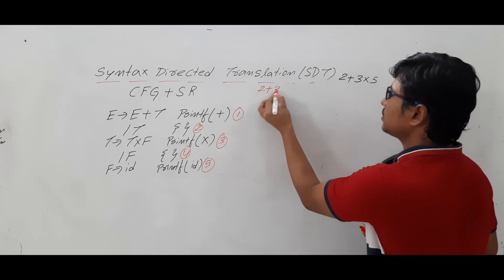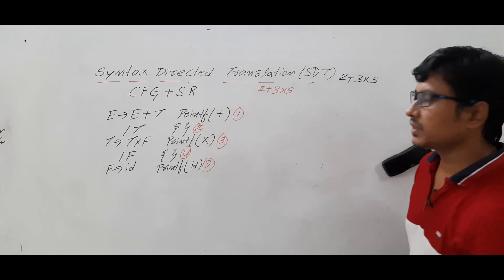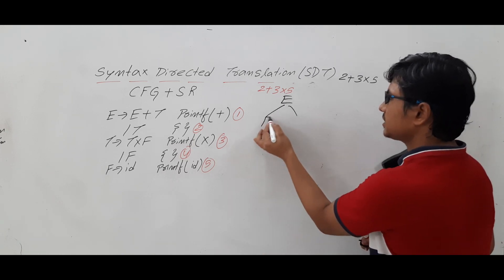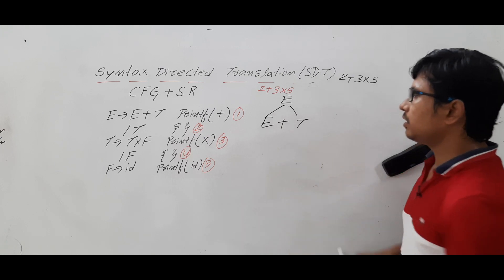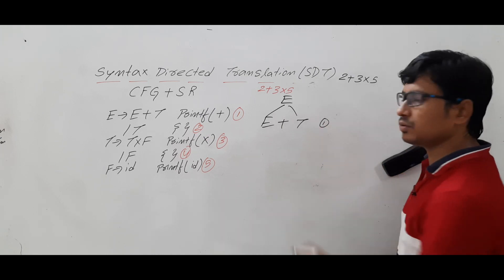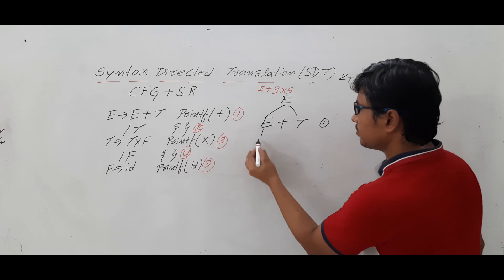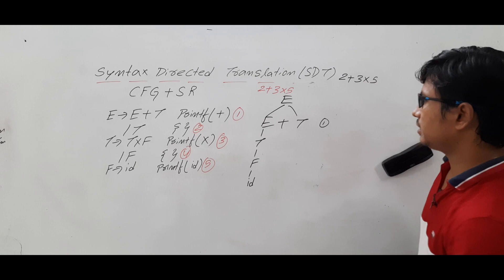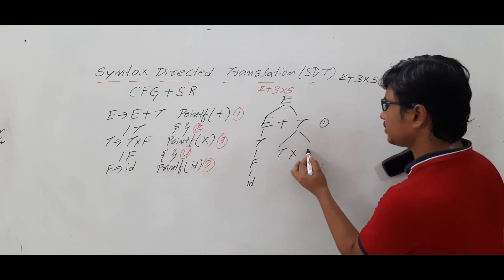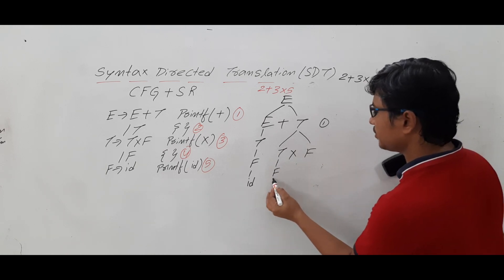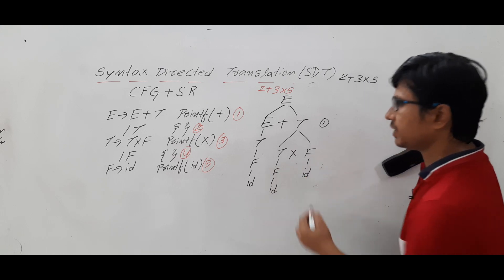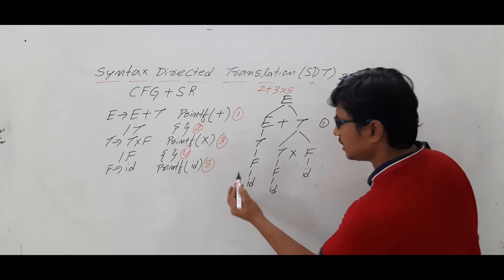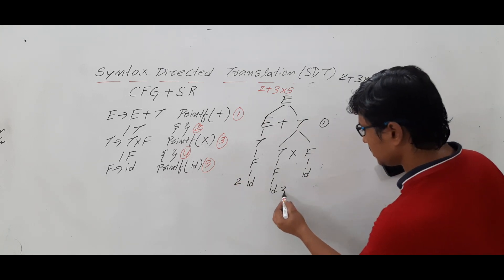Let me construct a new parse tree for the same input 2 plus 3 into 5. E determines E plus T — rule number one. From E you go to T, T goes to F, F goes to ID. Then T star F; from F go to ID, from F go to ID. The ID values are: this ID value is 2, this is 3, and this is 5.